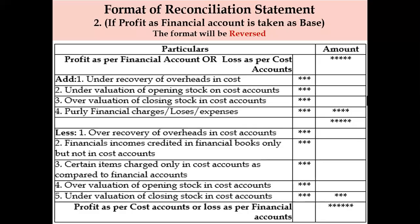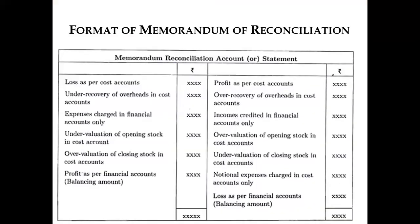There are two types of reconciliation statement formats. One is the statement form, and the other is the memorandum of reconciliation, which is in account form — an alternative method. Under the memorandum method, an account is prepared to reconcile the profit or loss of both sets of accounts. Items to be added in the statement are taken on the credit side, and items deducted are taken on the debit side of this account.